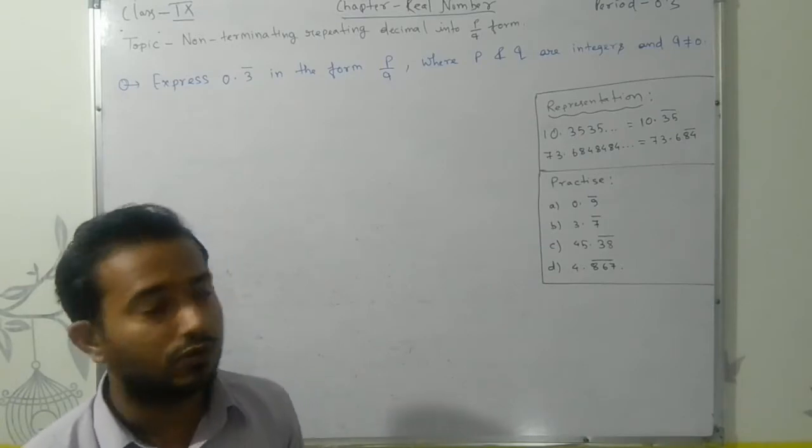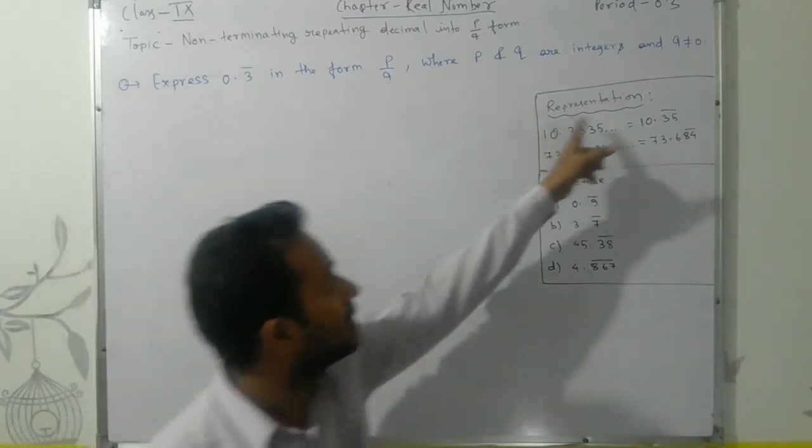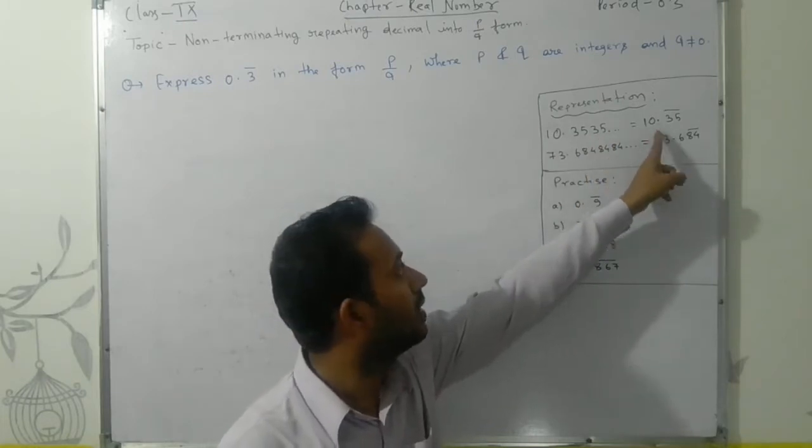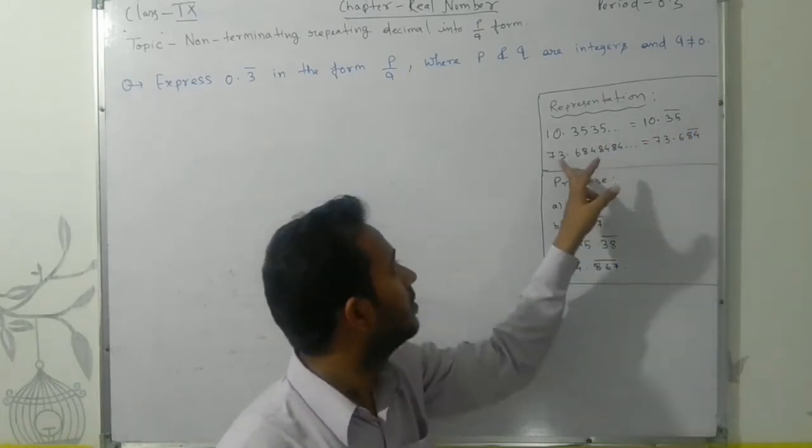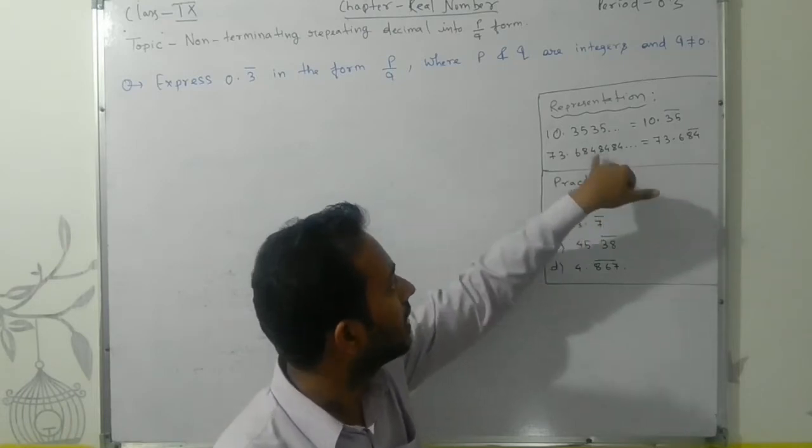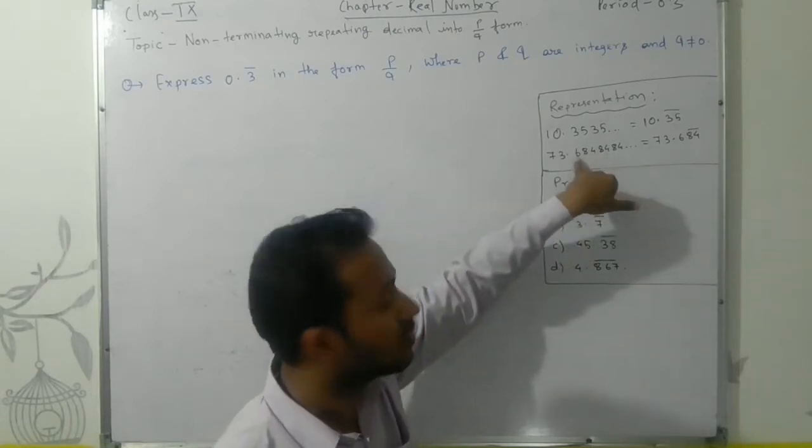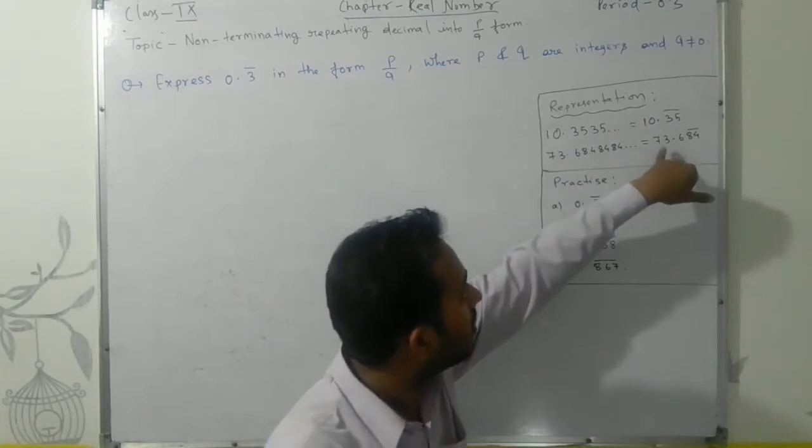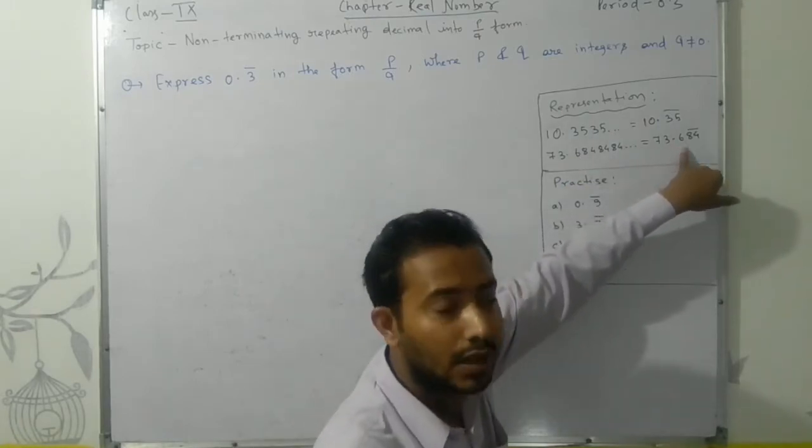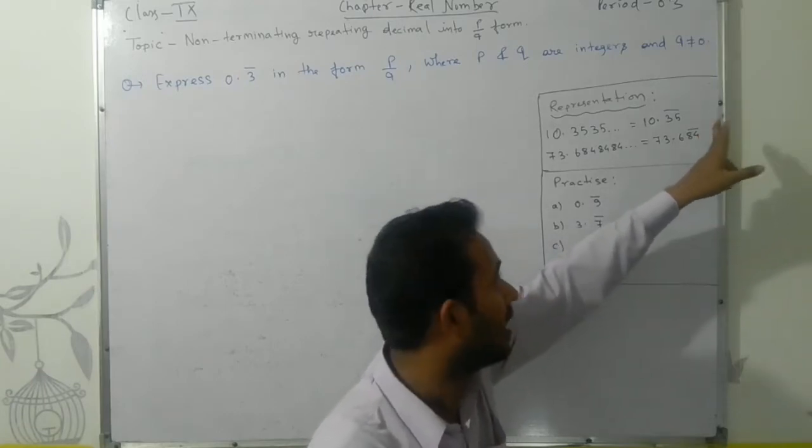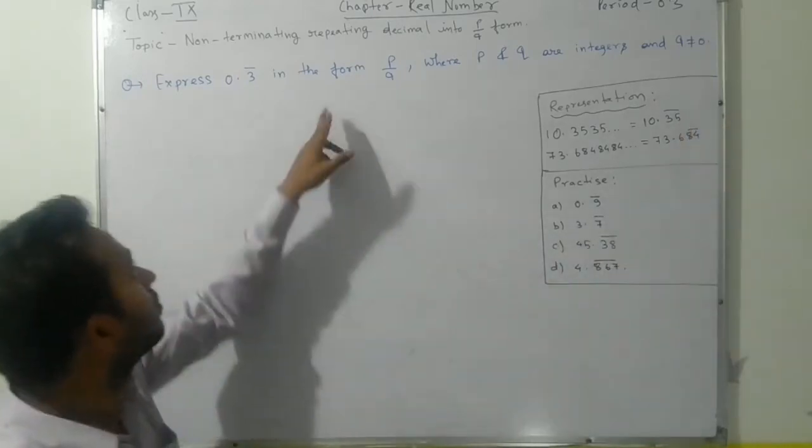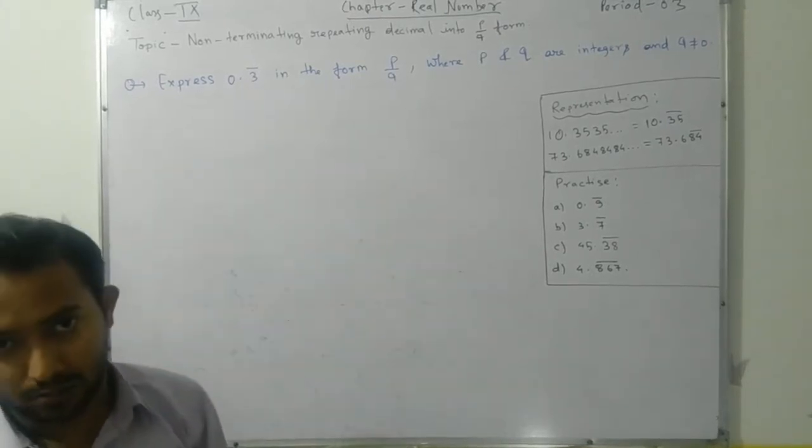Look at the representations: 10.3535 can be written as 10.35 bar. 73.684848, look here, 84 is repeating so this number can be represented as 73.6 84 bar. The bar is on 84. Here 3 is repeating, so let's start.